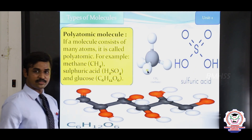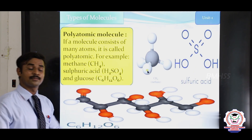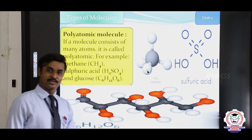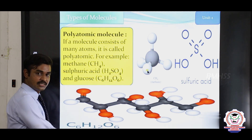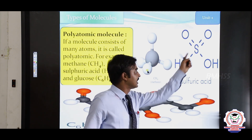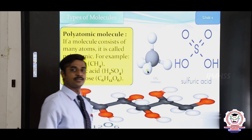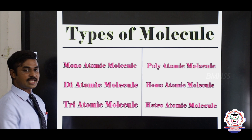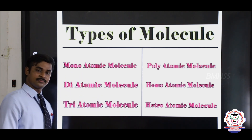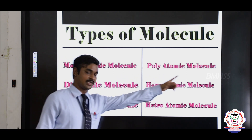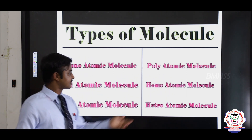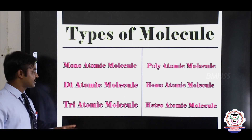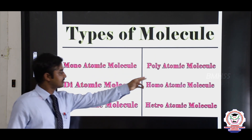The final type is polyatomic molecules. The word 'poly' means many — that means more than 3 atoms present in the molecule makes it a polyatomic molecule. For example, C6H12O6 glucose and sulphuric acid H2SO4 — these molecules contain many atoms, so they are called polyatomic molecules. In total, the types of molecules are: monoatomic, diatomic, triatomic, and polyatomic molecules, or alternatively classified as homoatomic or heteroatomic molecules.